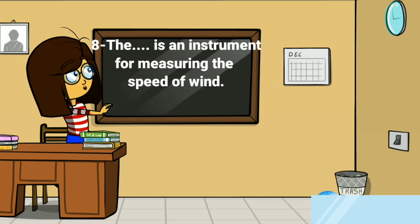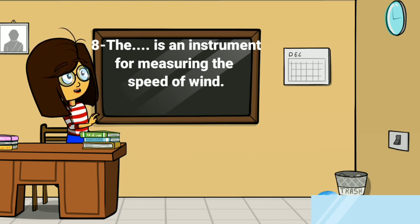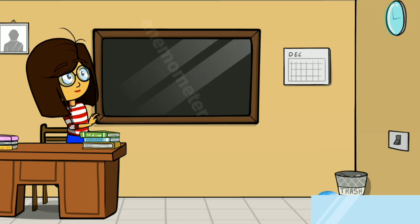The next question: the dash is an instrument for measuring the speed of wind. The answer is an anemometer is an instrument for measuring the speed of wind.